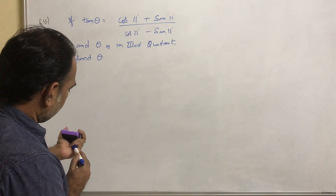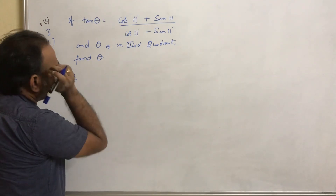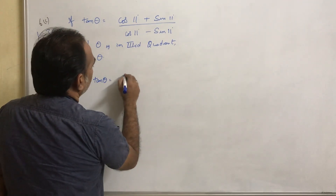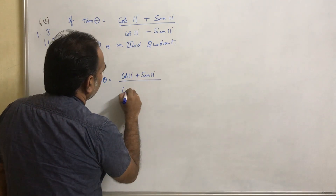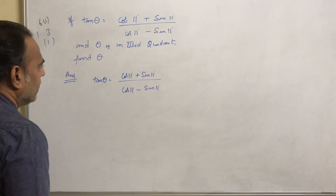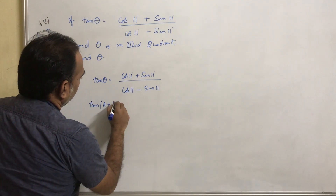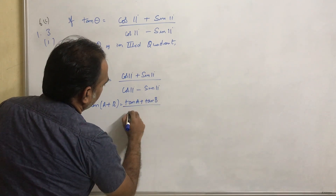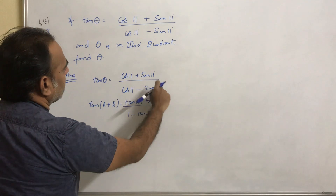To solve these types of problems, first we have to write down what is given. If we are able to write the given, half of our problem is solved. We know that tan(a+b) equals tan a plus tan b divided by 1 minus tan a times tan b. We need to convert the given expression into this format.